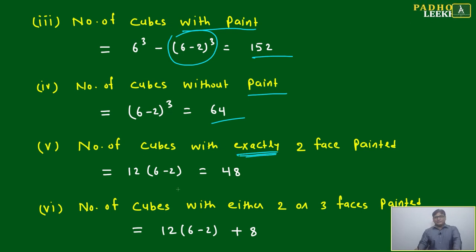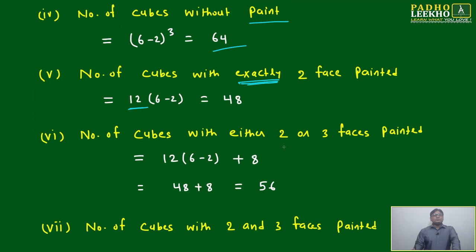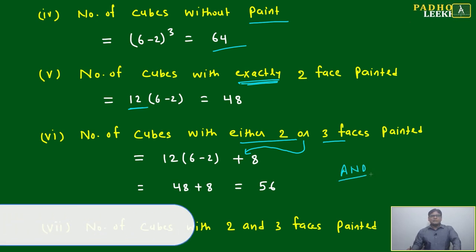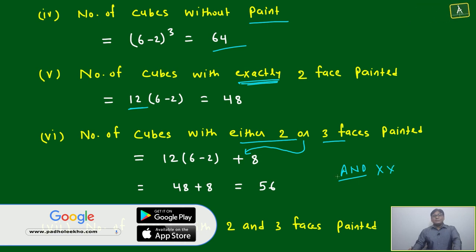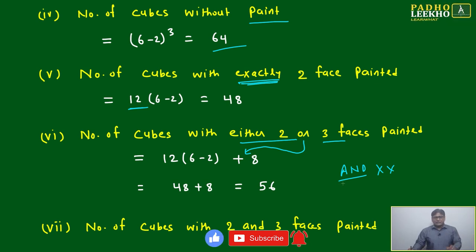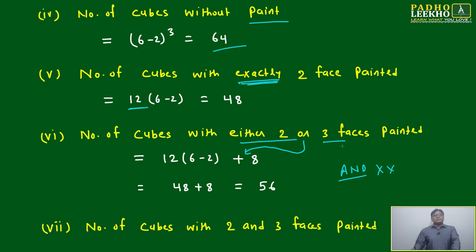Number of cubes with exactly two faces painted: these are the cubes on the edges, 12×(6−2) = 48. For cubes with either 2 or 3 faces painted: 'or' means addition here. One cube cannot be both two-face and three-face painted simultaneously, so there is no overlap. That gives 12×(6−2) + 8 = 48 + 8 = 56.